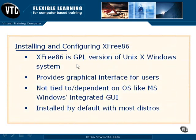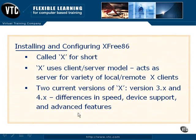X-Free86 is basically a free version, or public license version, of X-Windows. It provides a graphical, point-and-click interface and is not specifically built for any one operating system. Most distributions come with X-Free86 installed by default. A lot of people call it X for short, and it actually uses a client-server model, meaning the server runs in the background and allows for multiple X sessions running both remotely and locally, providing flexibility that you might not have with a single model environment.